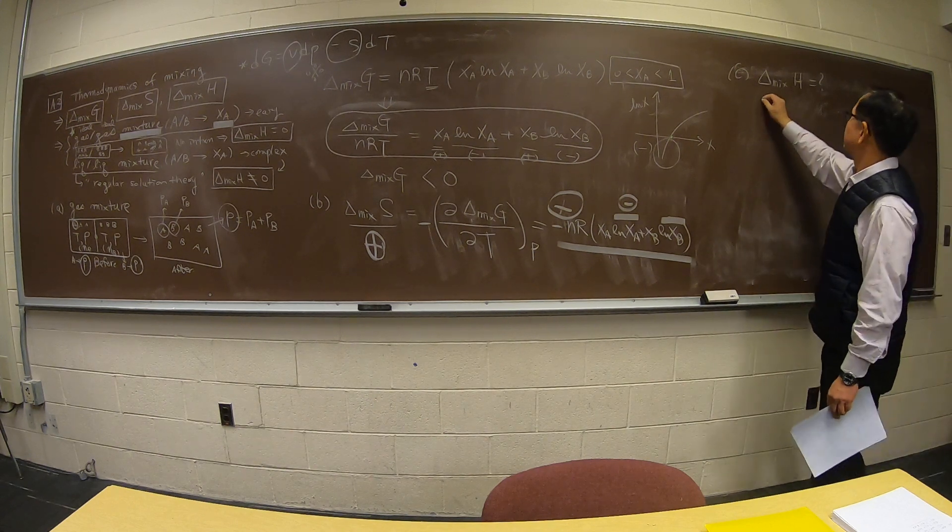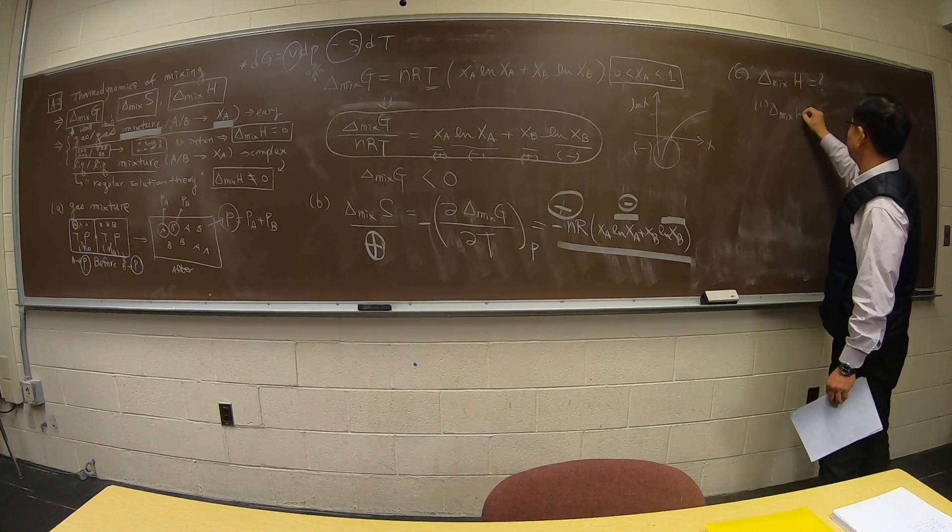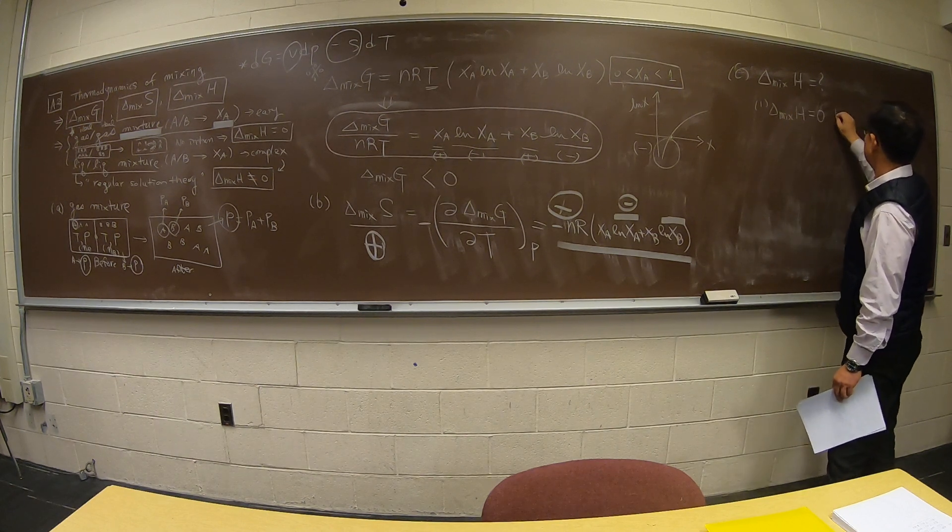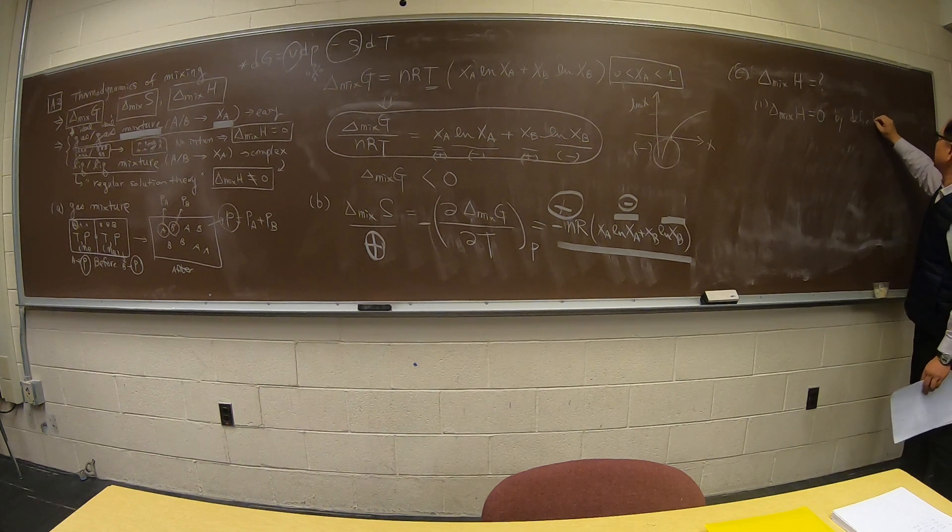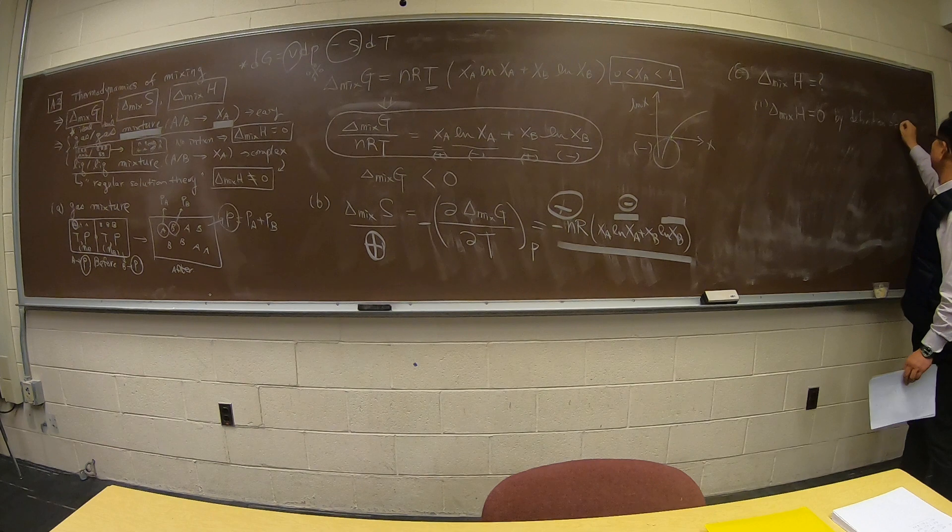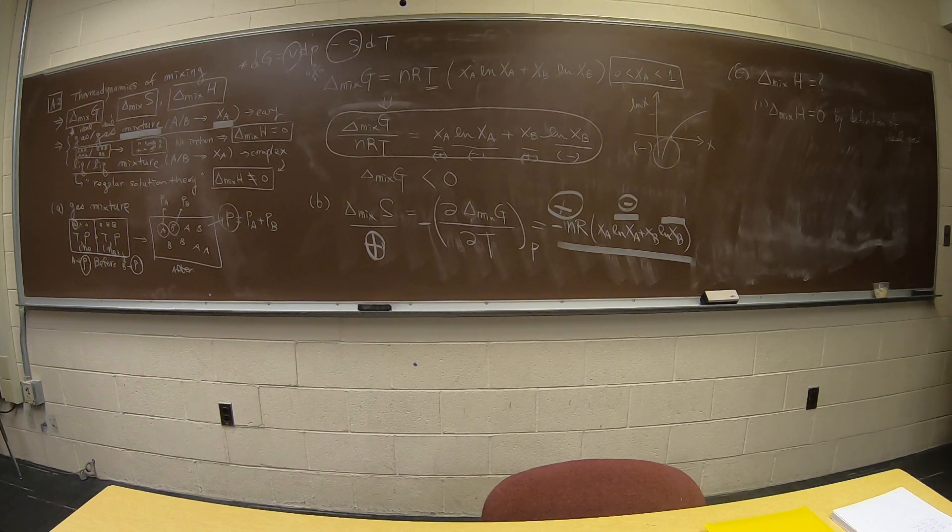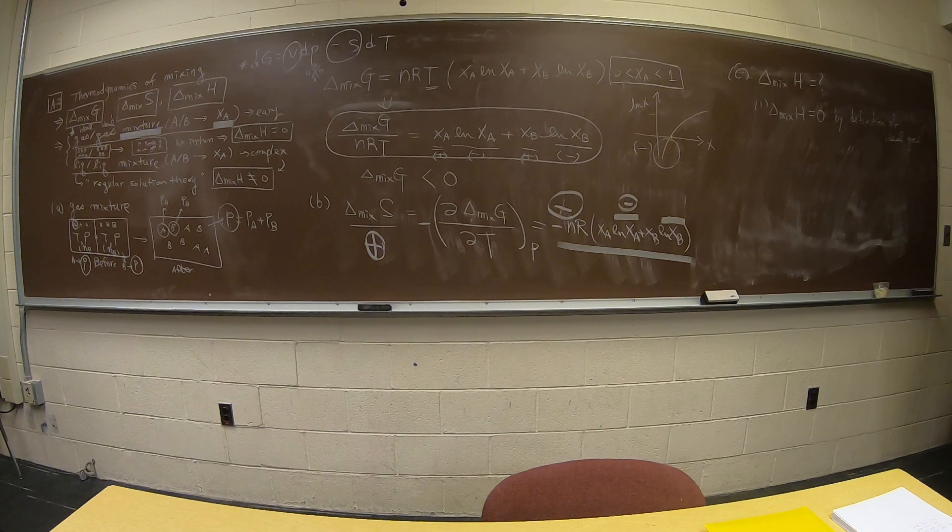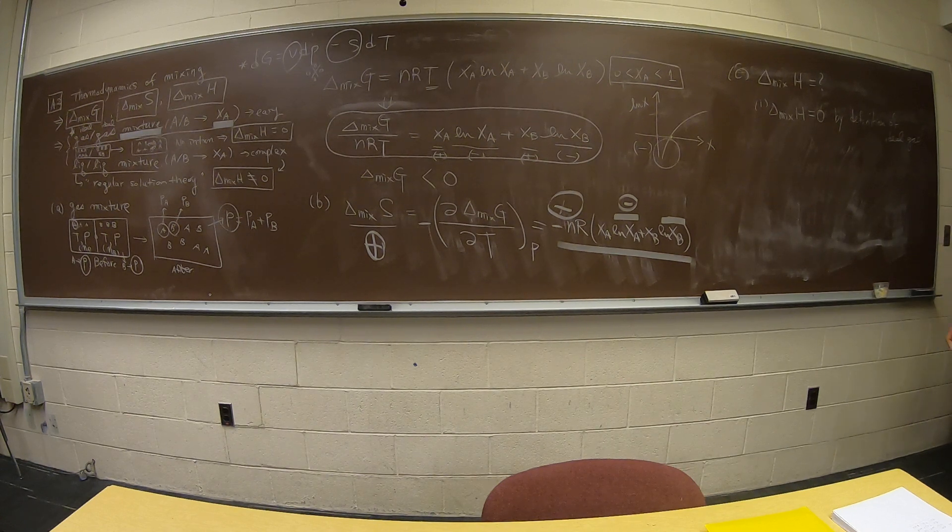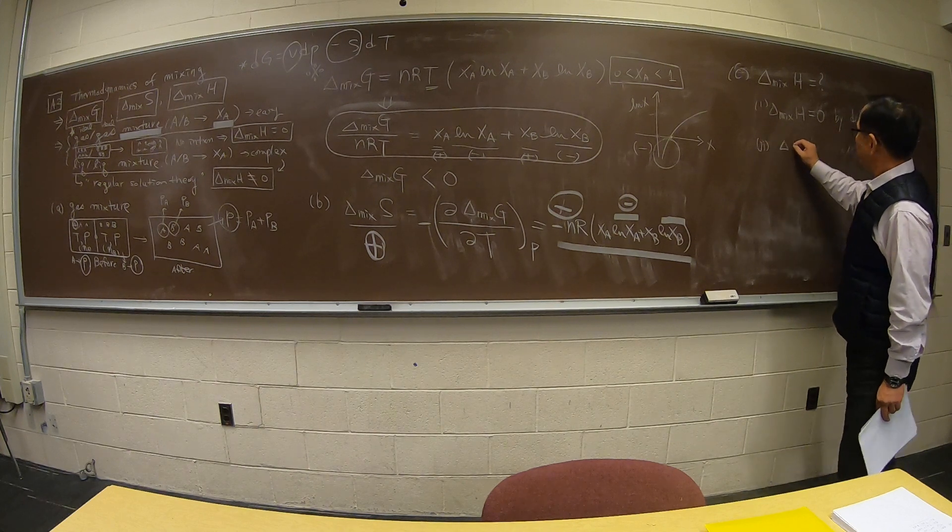One is delta H mix is zero by definition for ideal gas. Which means there's no interaction, so before and after there's no interaction change, because you don't have any interaction to begin with. So there's nothing really changing at all. Number two is this way.